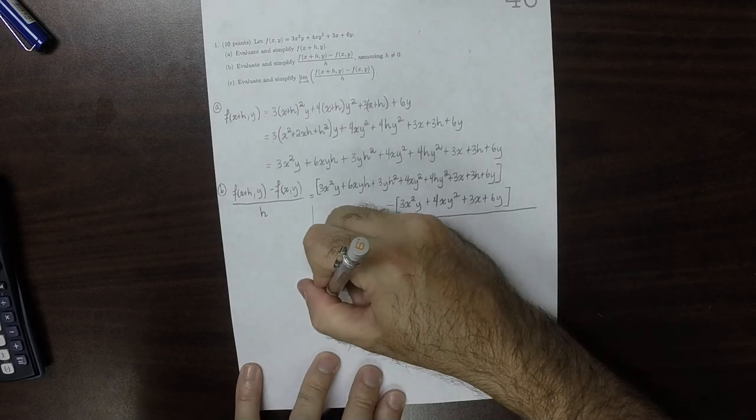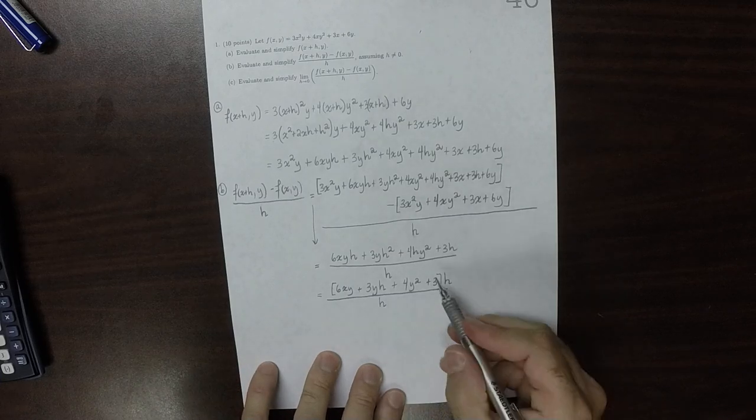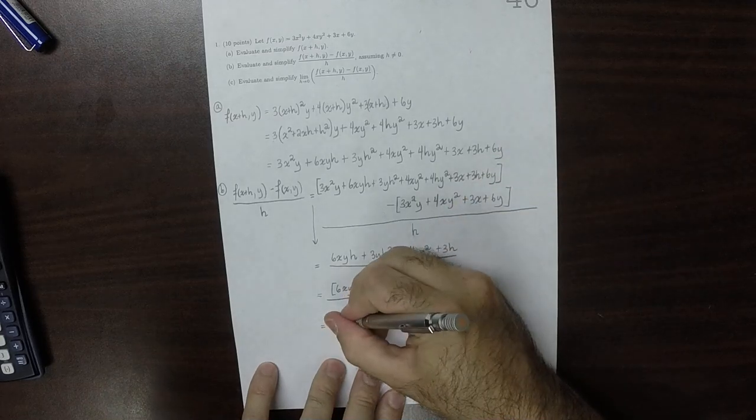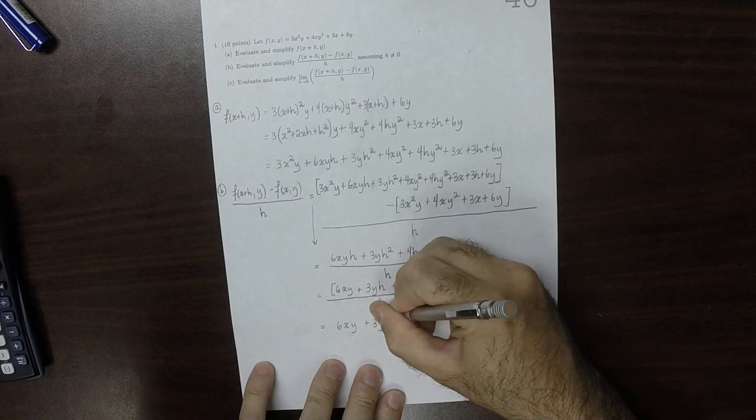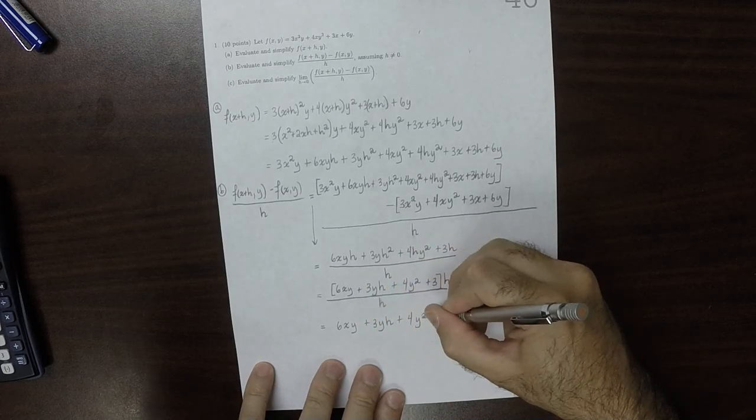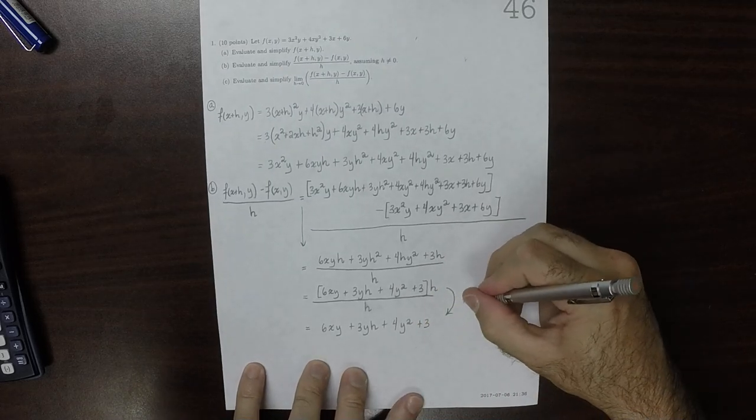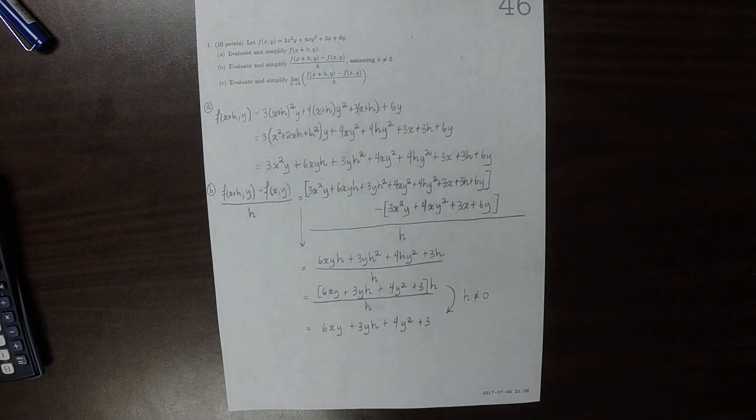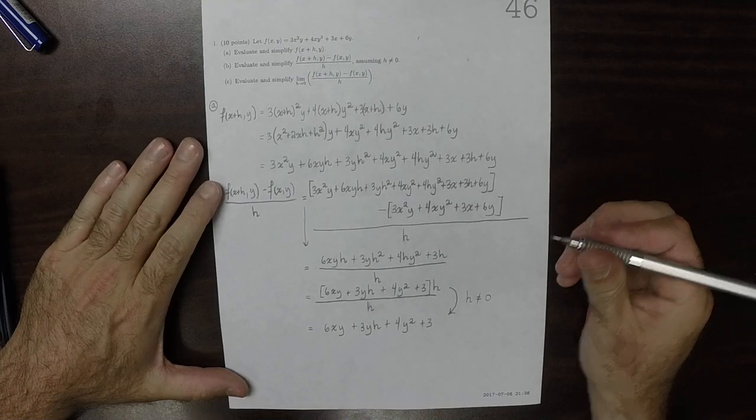And then that h is now factored out and then over h. And now we can cancel that h over h to obtain 6xy plus 3yh plus 4y squared plus 3. And we can do this cancellation because h is non-zero. If h were zero, possibly, then it would not be possible to make that cancellation.